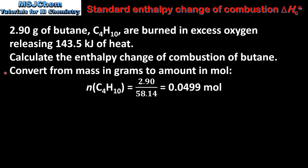The first step is to convert from mass in grams to amount in moles. The amount in moles of butane is equal to 2.90 divided by the molar mass of butane, which is 58.14 grams per mole. This gives us 0.0499 moles.